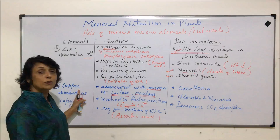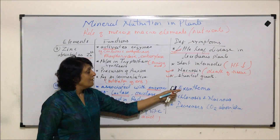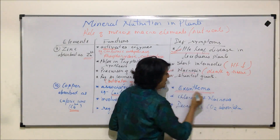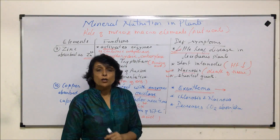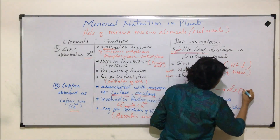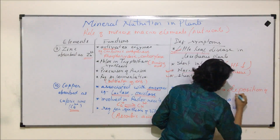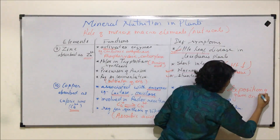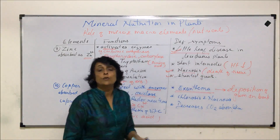The deficiency disease caused by absence or low concentration of copper is known as exanthema. Exanthema is characterized by secretion of gum and deposition of this sticky gum material on the bark of the plant.